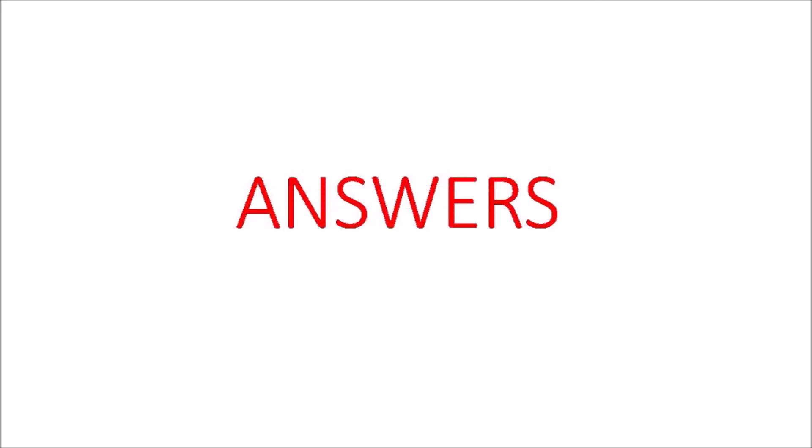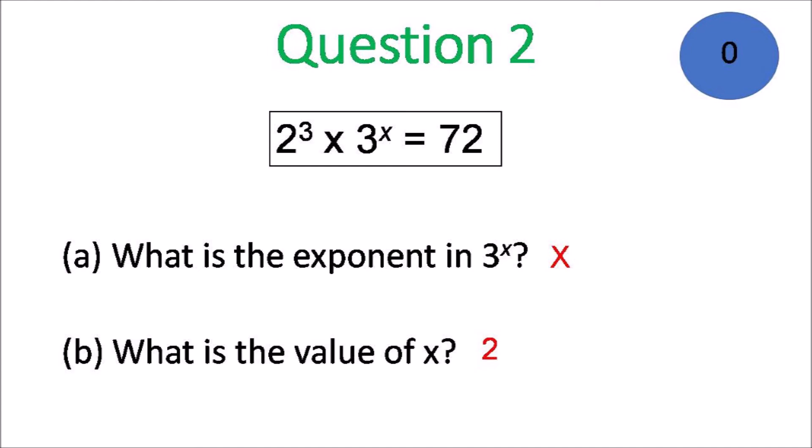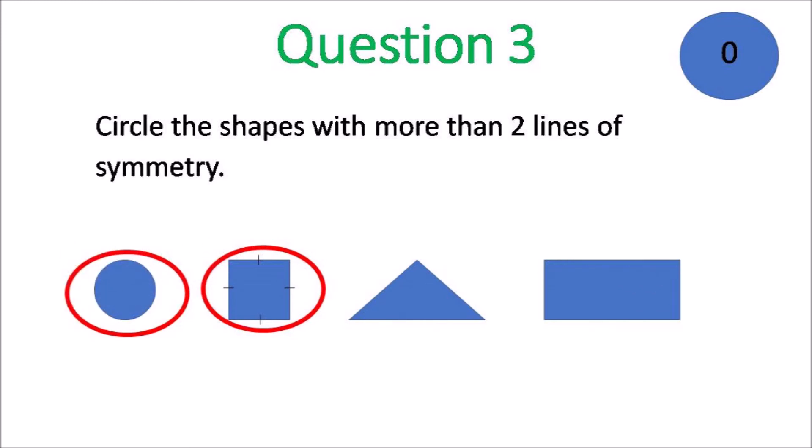Answers coming up. Here we go. Grade 6 Question 1. L-I-X is 59 and CXL is 140. Question 2. The exponent in 3 to the X is X and the value of X has to be 2. 2 to the 3 is 8, times 3 squared is 9, 8 times 9 equals 72. Question 3. The shapes with more than 2 lines of symmetry, it can't be the rectangle. So it has to be the square and the circle. The circle has an infinite number of lines of symmetry.